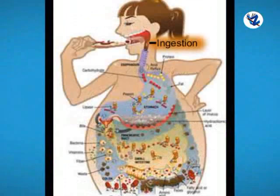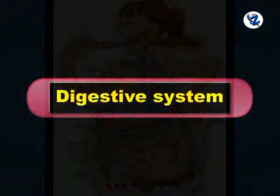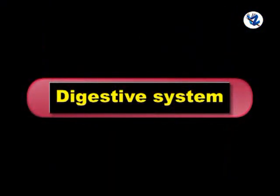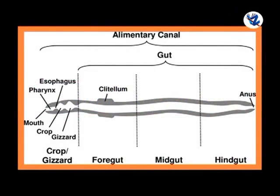During ingestion, food is taken inside the body. This ingested food is then digested. So first we will see the human digestive system. It consists of an alimentary canal and associated glands.